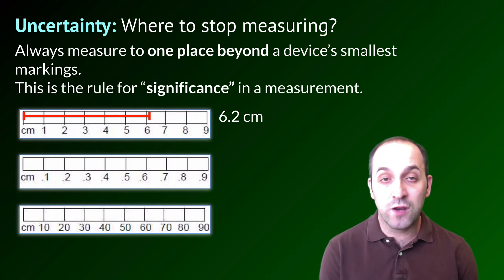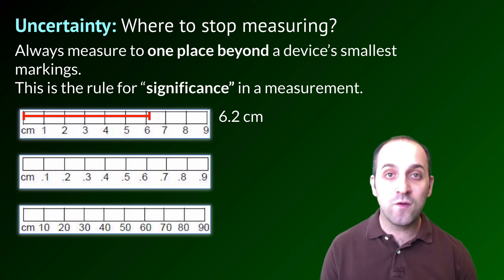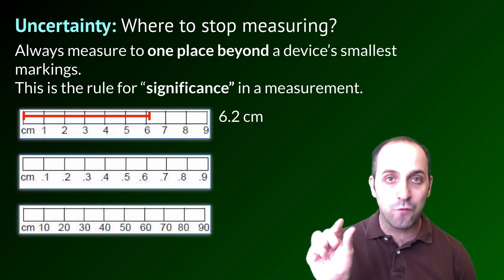Now, if you did this and you had something like 6.3 centimeters, don't be concerned about that. That estimation piece is always going to be the most uncertain part, and so it's not uncommon to have that waver back and forth a little bit.